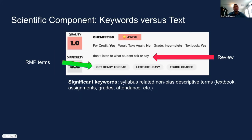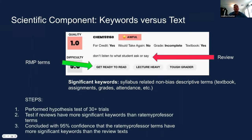When looking at this review as a whole, we wanted to see what contained the most significant keywords for our algorithm, so we conducted a hypothesis test. Our hypothesis test consisted of 30 trials, and we wanted to test what had more significant keywords: the Rate My Professor terms that the student selected, or the review that the student wrote out. We concluded with over 95% confidence that the Rate My Professor terms had more significant keywords than the reviews themselves, and so those terms are the significant keywords that will be utilized for our compatibility assessment.